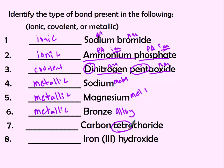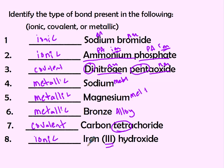Carbon tetrachloride should be covalent — carbon and chlorine are both non-metals. And if you see Roman numerals, it's got to be ionic. We have a metal and a non-metal, or technically a polyatomic ion in this case. So those are our types of bonds — now let's look at the properties of them.